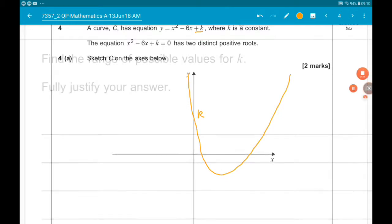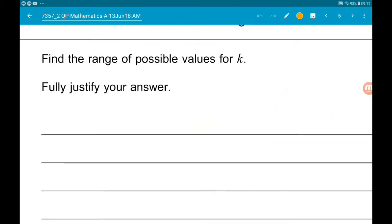Cool. Okay, then for part B, our first format question, we want to find the range of possible values for k. Fully justify your answer.